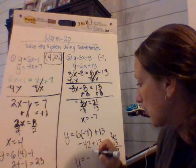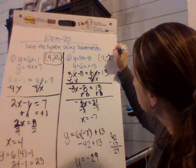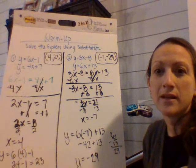So I'm going to get y is equal to a negative 29. So when I put my answer together, my solution is the point negative 7 comma negative 29.